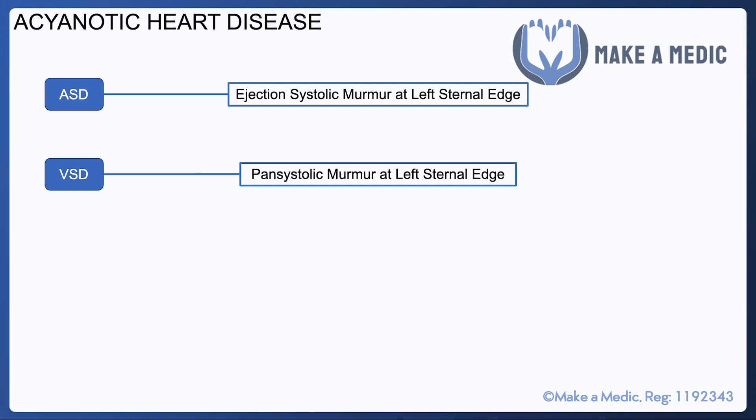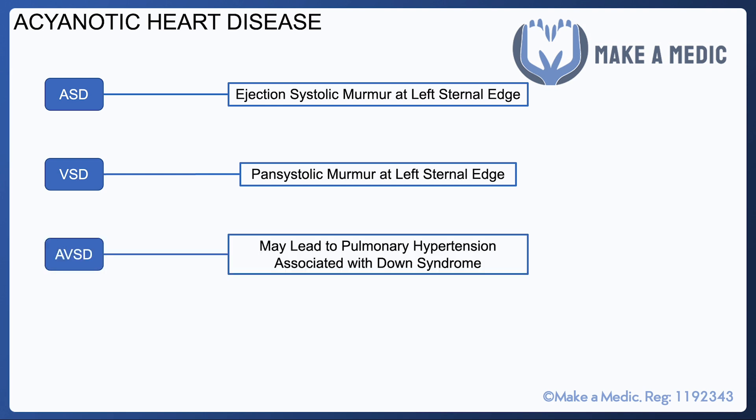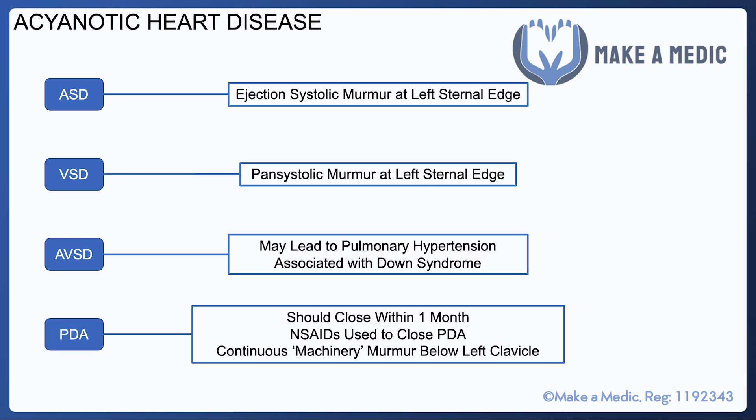A VSD, on the other hand, causes a pan-systolic murmur that's also at the left sternal edge. A couple of key points to remember: it may lead to pulmonary hypertension because it places more strain on the right side of the heart, and it's classically associated with Down syndrome — it's the most common cardiac abnormality seen in Down syndrome.